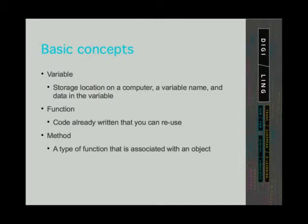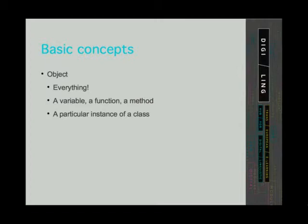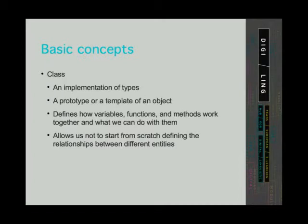A method is a type of function that is associated with an object. Objects are everything in object-oriented programming — they could be variables, but they could also be functions or methods. They are a particular instance of a class. A class is a kind of prototype of an object. Classes say what the characteristics of objects belonging to their class are — they define how variables, functions, and methods work together and what we can do with them. Simply put, they define the implementation of types. The purpose of a class is to allow us not to start from scratch when defining the relationships between different entities. If we want to run addition on objects of numeric data types, we don't have to define that addition is an acceptable operation on numbers.